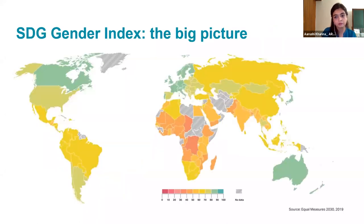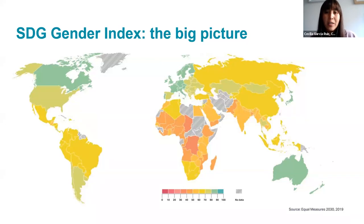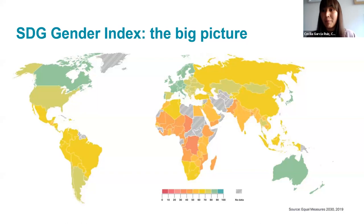We hope to spend the next couple of minutes introducing you to the index and telling you a little bit more about how the data has been packaged in the index and can be used in your advocacy and other work around the sustainable development goals. This heat map shows the big picture at a glance, where we can quickly identify how the 129 countries included in the SDG gender index are performing. This heat map is based on the overall gender index scores, on a scale of zero to 100.